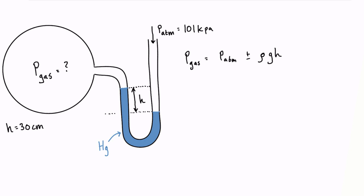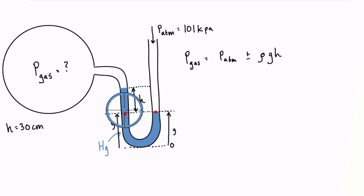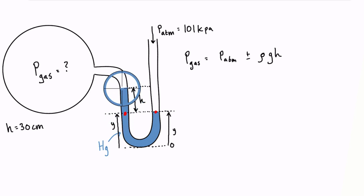We can draw a dotted line across at this level. Any point above our datum — reference datum of zero — we could call this height y, which means over here it's also y. So these two points: this point right here is experiencing atmospheric pressure pointing down on it, and over here on the left-hand side, it's at the same depth of the fluid column, so it's also experiencing atmospheric pressure — that is the pressure of the fluid at that location.